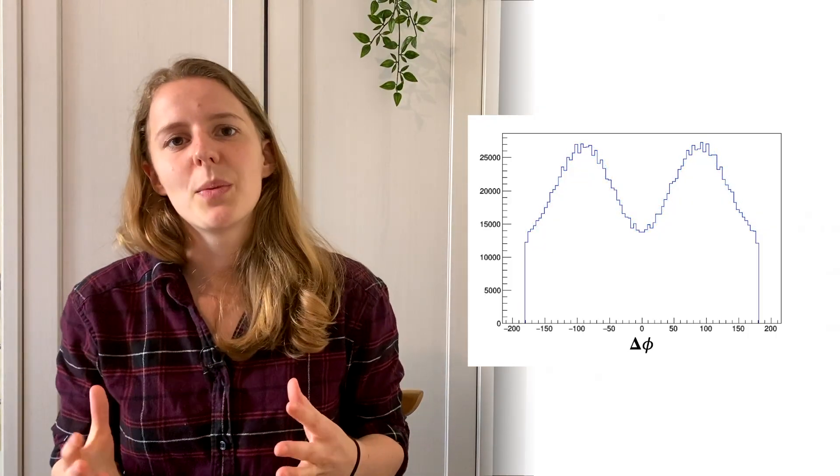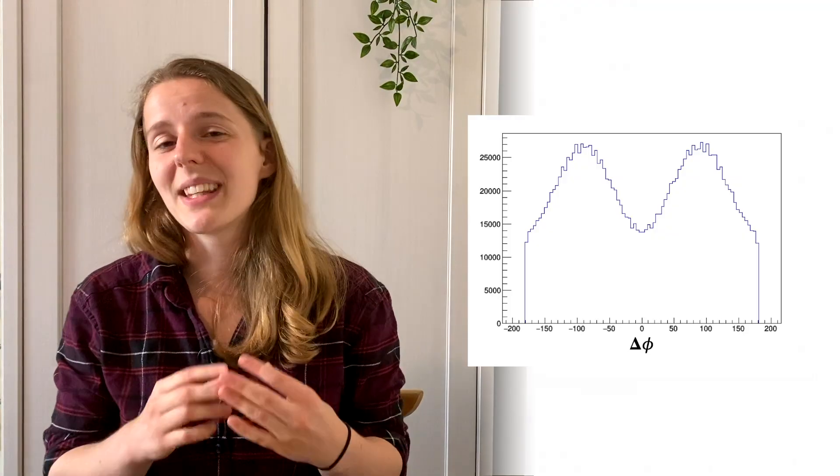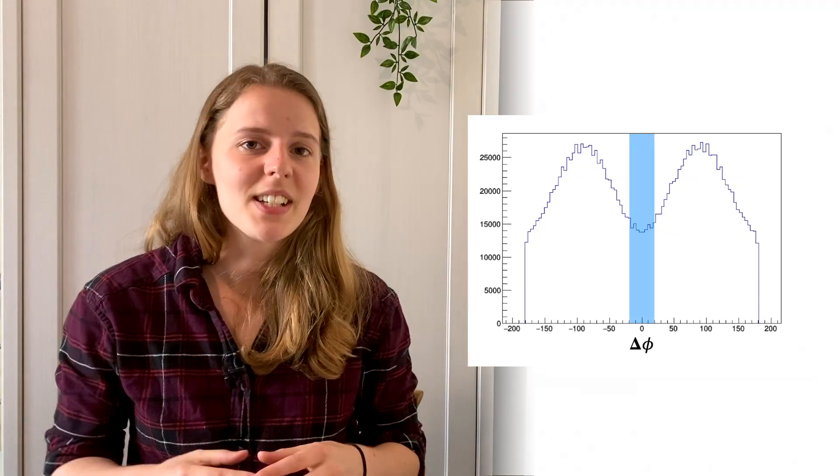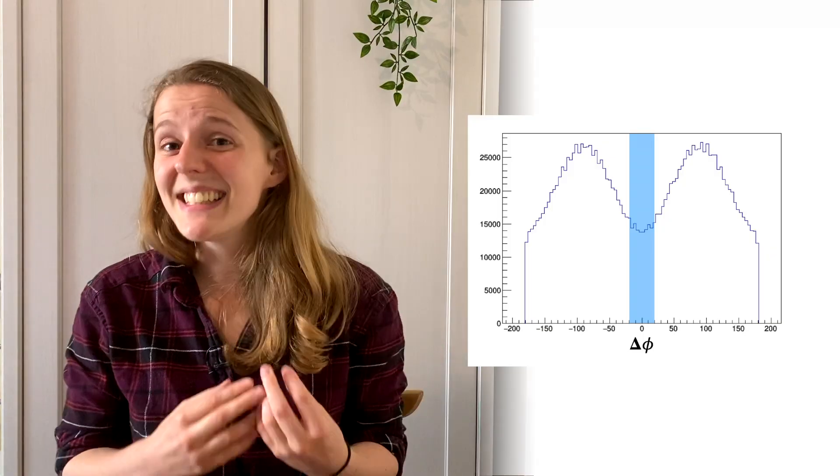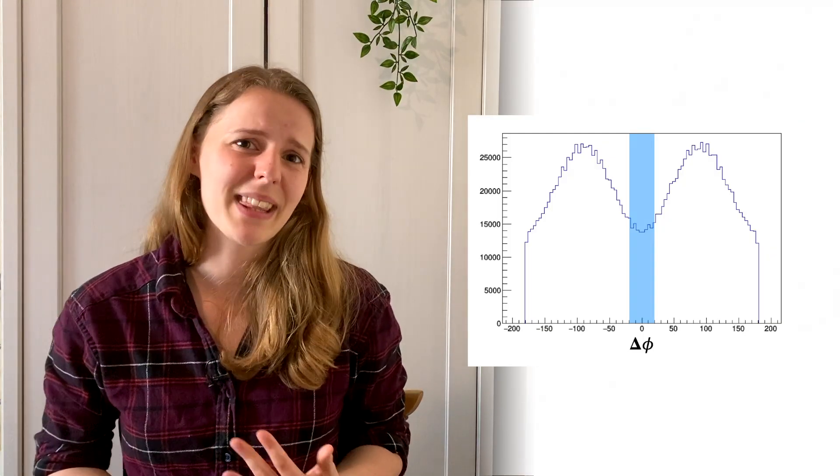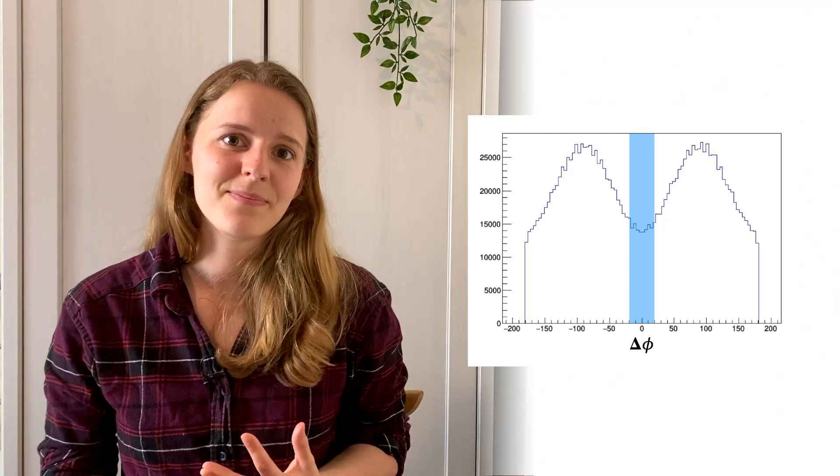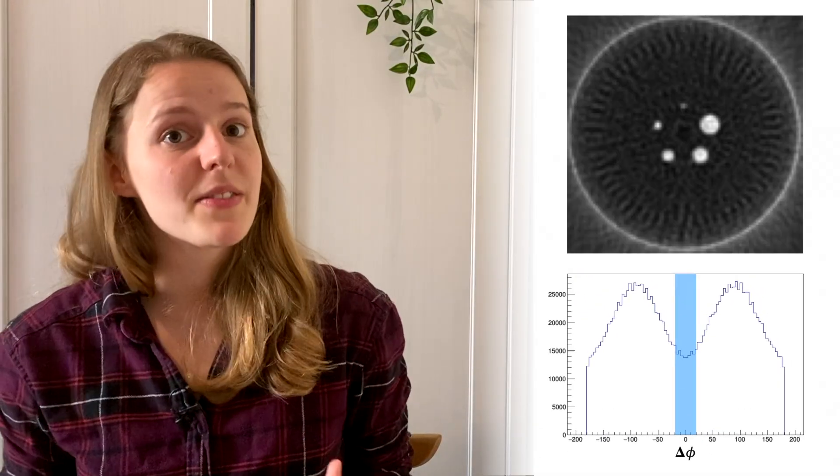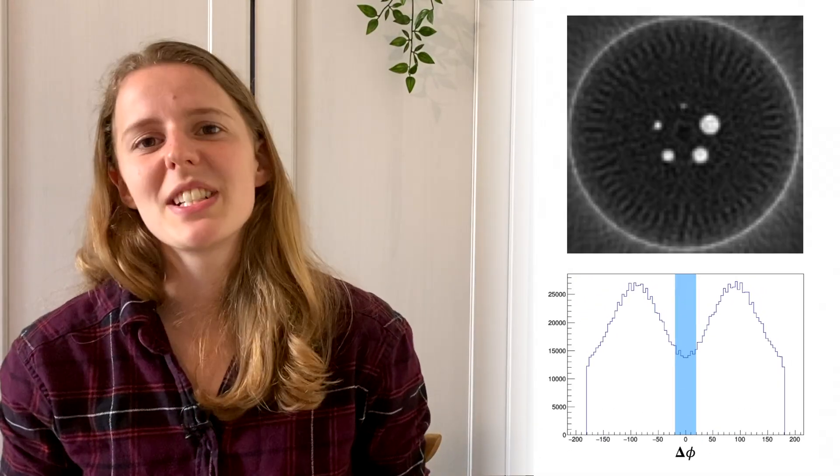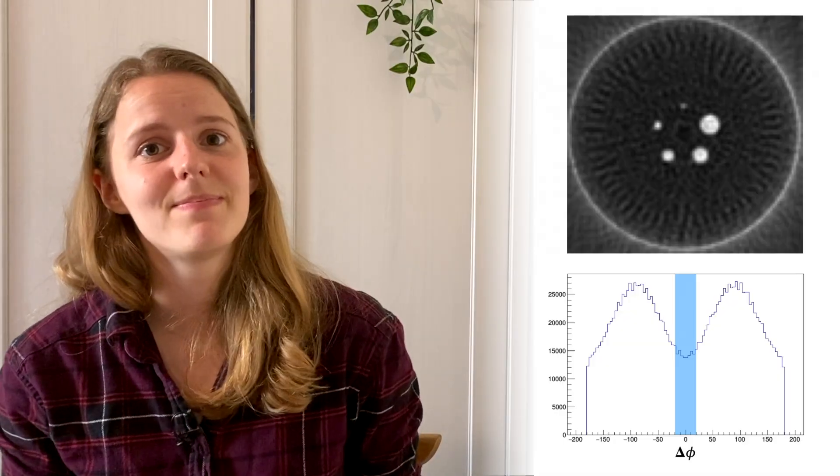We can then reconstruct an image. For this first image, we're only going to use events with delta phi around zero. So these are the events we think are least likely to be entangled. So if we only use these photons, we can expect the image to look pretty bad. You can see five bright circles where the radioactive sources are, but the image is blurred and noisy.